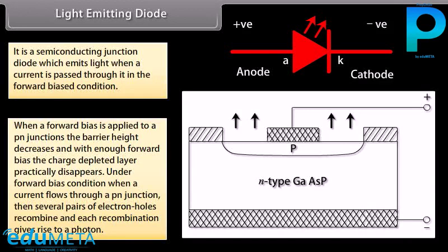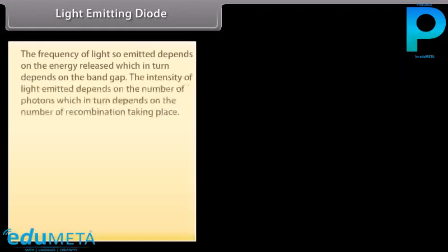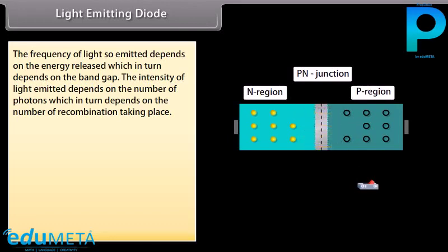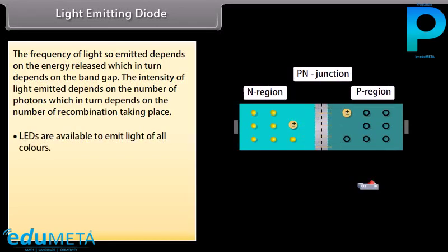When a forward bias is applied to a P-N junction, the barrier height decreases and with enough forward bias, the charge depleted layer practically disappears. Under forward bias condition, when a current flows through a P-N junction, several pairs of electron holes recombine and each recombination gives rise to a photon. The frequency of emitted light depends on the energy released, which in turn depends on the band gap. LEDs are available to emit light of all colors.